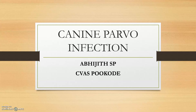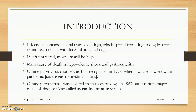Today we are dealing with the canine viral disease section — canine parvo infection, which is a very common viral infectious gastrointestinal disease found in pups. It is an infectious contagious viral disease of dogs which spreads from dog to dog by direct contact with the feces, or indirect contact with the feces of an infected dog. If the dog is left untreated, the mortality rate will be high, and the cause of mortality will be endotoxemia and acute hypovolemic shock.